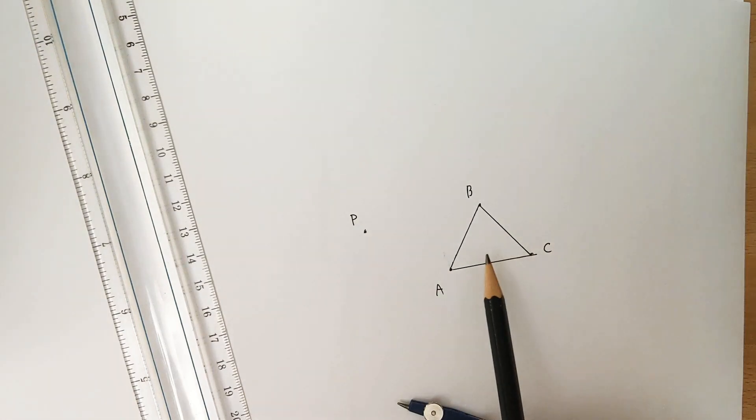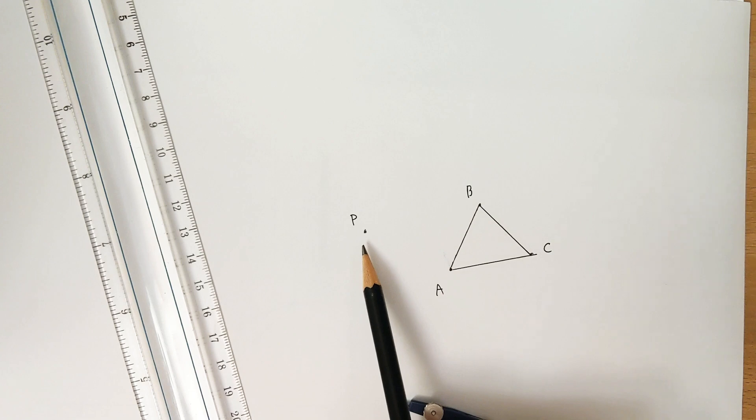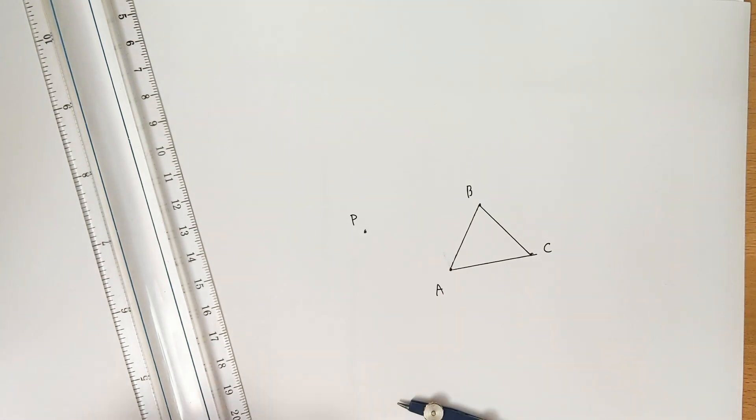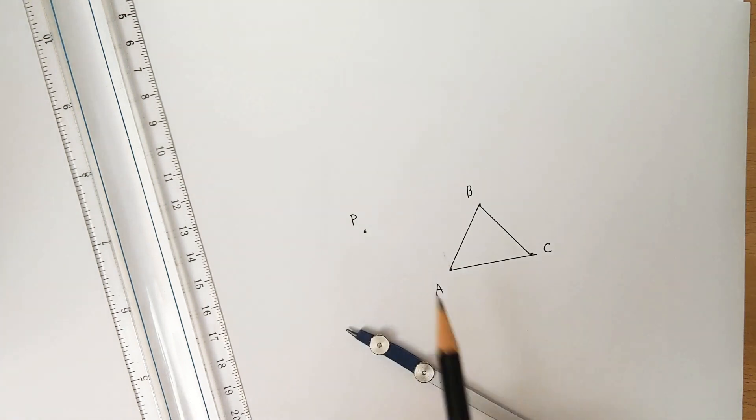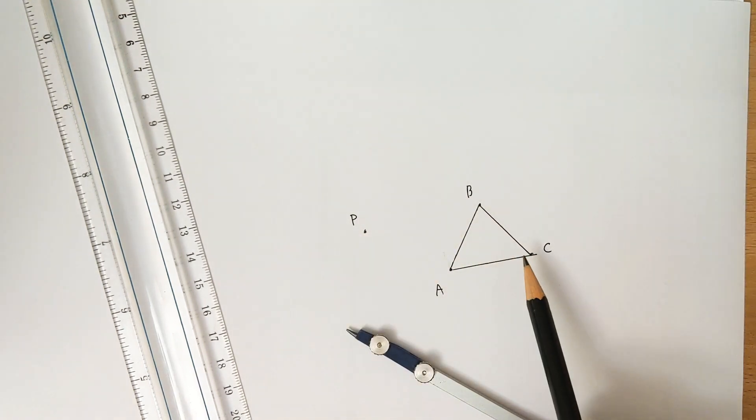We're going to rotate this triangle 180 degrees around the center of rotation P using just a compass and a straightedge. The first thing to remember about our rotation is that we always rotate a single point by single points, so we don't think of the whole figure at once.